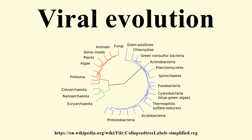The evolutionary history of viruses can to some extent be inferred from analysis of contemporary viral genomes. The mutation rates for many viruses have been measured, and application of a molecular clock allows dates of divergence to be inferred. Viruses evolve through changes in the DNA, some quite rapidly, and the best-adapted mutants quickly outnumber their less-fit counterparts. In this sense their evolution is Darwinian, just like that of their host organisms. The way viruses reproduce in their host cells makes them particularly susceptible to the genetic changes that help drive their evolution.